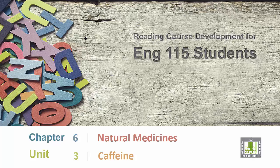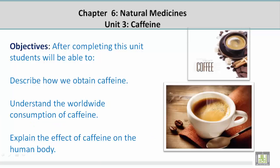Reading Course Development for English 115 Students. Chapter 6: Natural Medicines, Unit 3: Caffeine. Objectives: After completing this unit, students will be able to describe how we obtain caffeine, understand the worldwide consumption of caffeine, and explain the effect of caffeine on the human body.